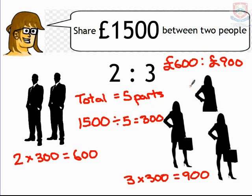So splitting into this ratio, we would get £600 to £900. What we should notice is that these two values still add up to £1,500, but have kept within this ratio.